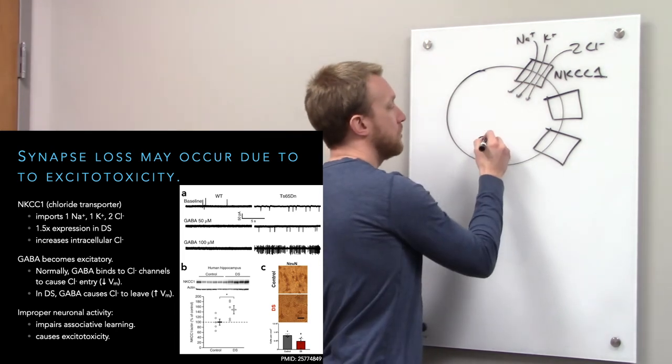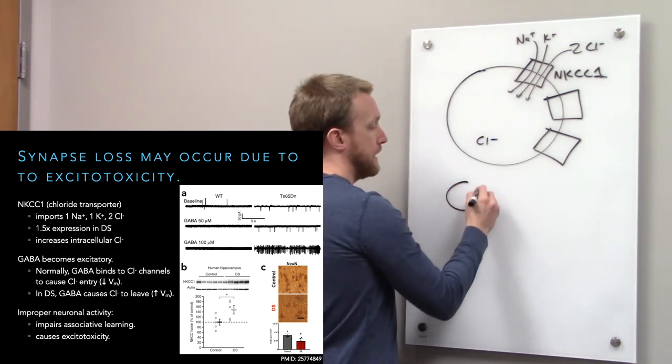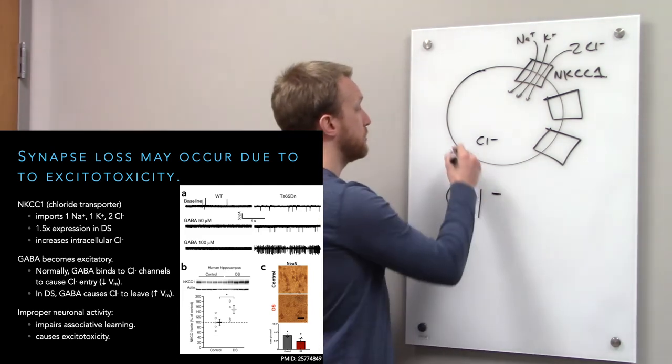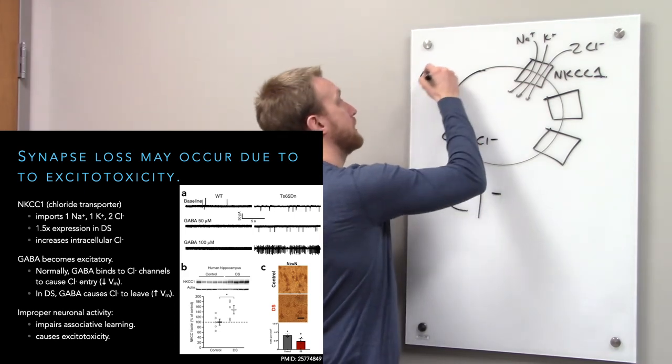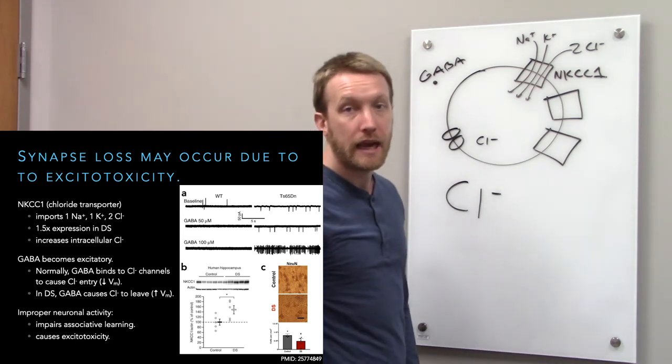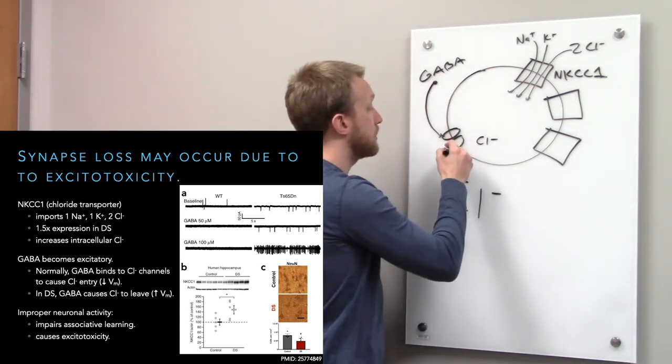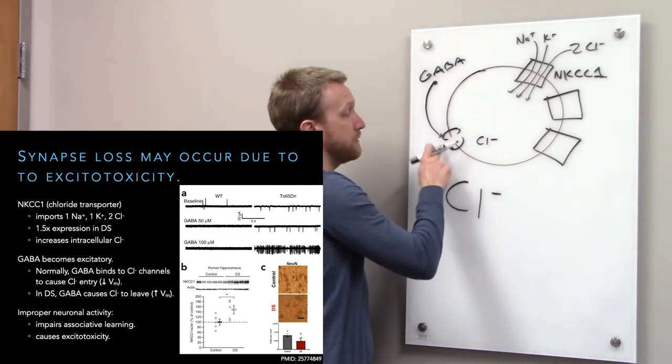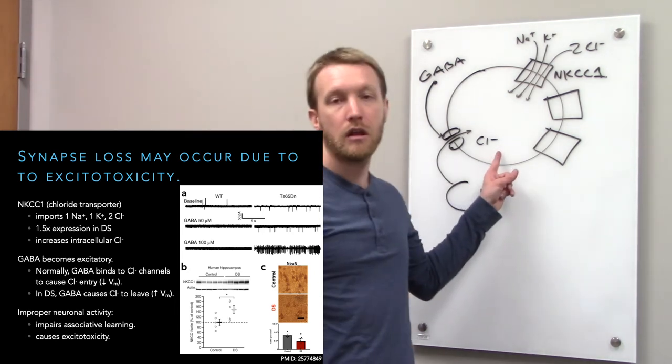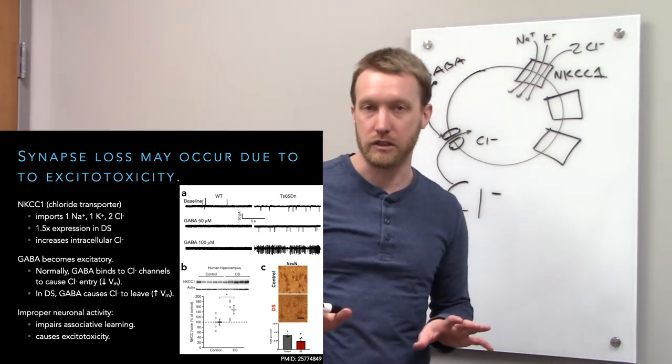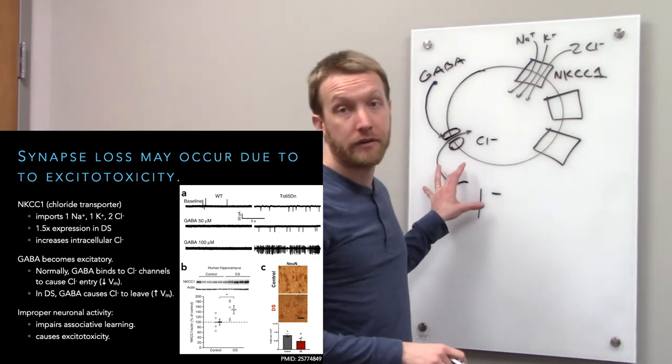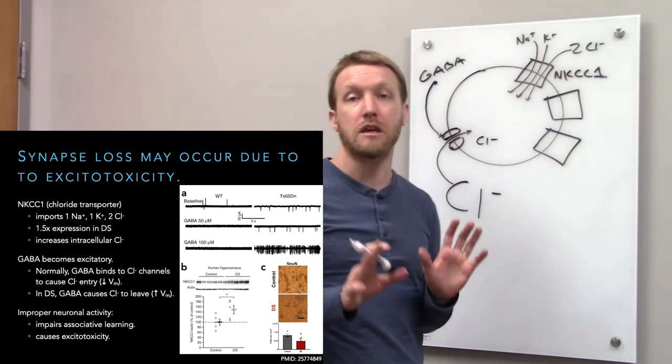We're pulling in a whole lot more chloride as a result. Normally, we should have very low levels of chloride inside and much higher levels of chloride outside. This way, whenever we apply something like GABA, for example, this is an inhibitory neurotransmitter, and it's inhibitory because it binds to chloride channels. When these open, chloride flows in to make the cell more negatively charged. That makes it harder to fire an action potential. The cell should become less active.